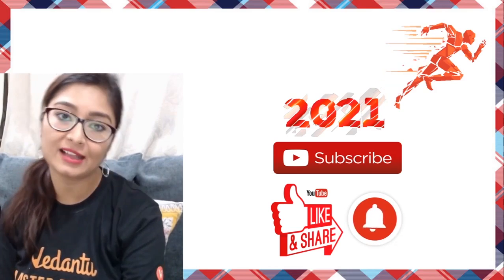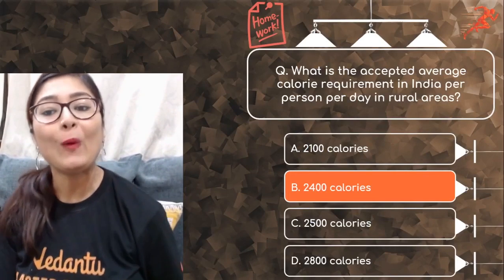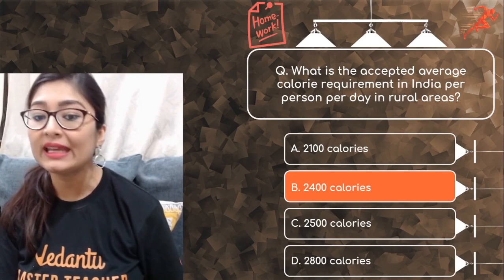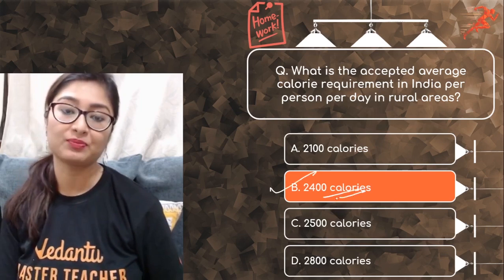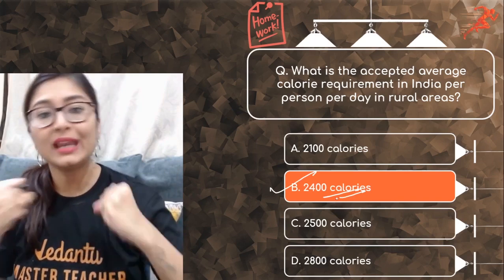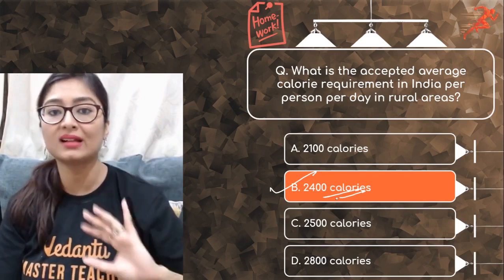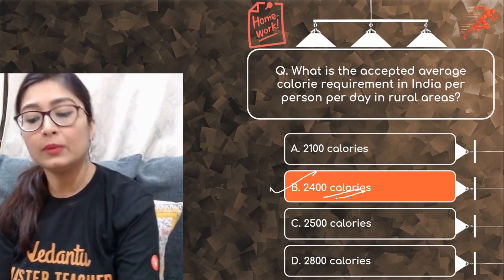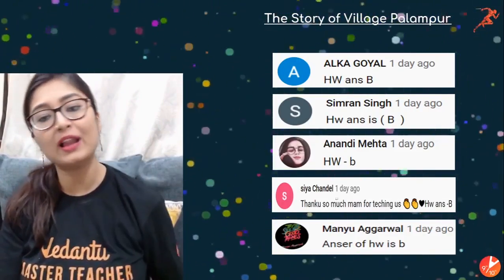Let's quickly go over the previous session's question: the accepted average calorie requirement in India per person per day in rural areas is 2400 calories. Rural areas need more because people there do more physical and manual labor compared to urban areas. Urban areas require slightly less — can you tell me how much in the comment section? Also check today's leaderboard.